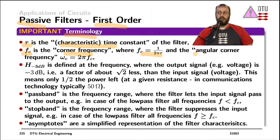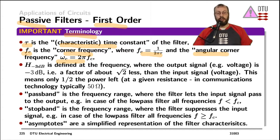We also have the angular corner frequency, which is simply the corner frequency multiplied by the factor of two pi. And then there is also the complex corner frequency sc, where you multiply omega by the imaginary number j.